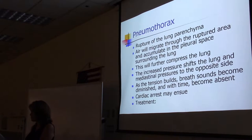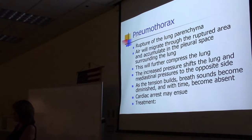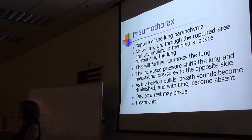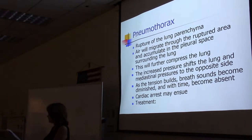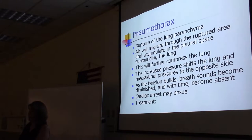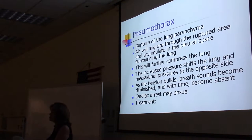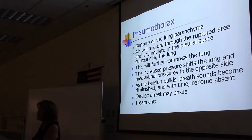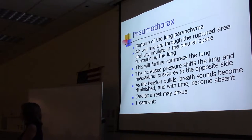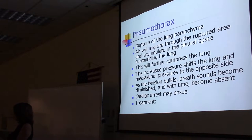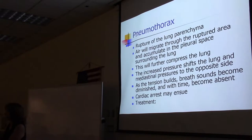What are the signs of a pneumothorax on a patient on positive pressure ventilation? Low blood pressure — the positive pressure in the pleural space pushes on all the vessels, resulting in less blood flowing to the heart. Unilateral chest rise — air accumulating in the pleural space squeezes one lung so it no longer inflates, while the unaffected lung inflates and deflates normally.